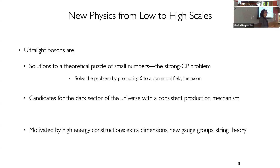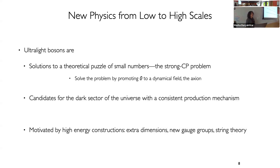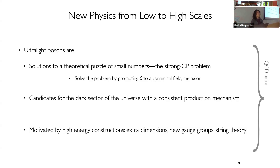They also have very simple and consistent production mechanisms. This is something important to ask if we're looking for any particles: are they consistent with everything we know about astrophysics and cosmology, as well as being able to detect them in our experiments? They're also motivated in high energy constructions, like extra dimensional models trying to complete the standard model at higher scales. These particles also often pop out. All of these points apply for the QCD axion, which is perhaps the most exciting out of all the ultralight bosons.